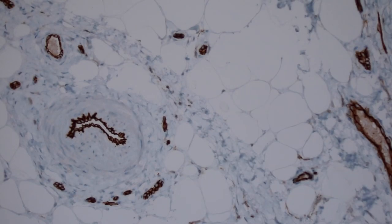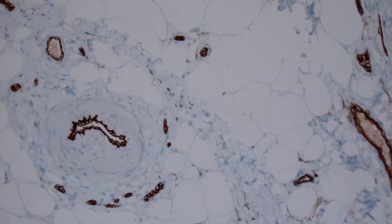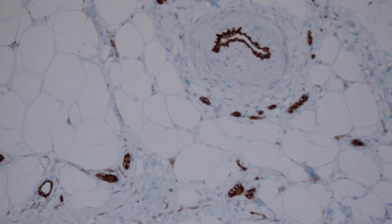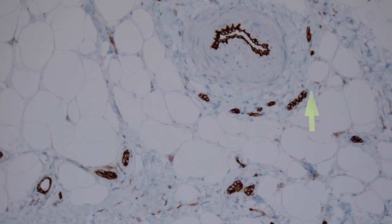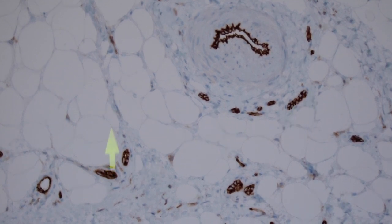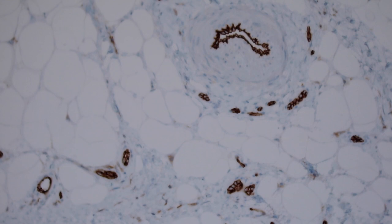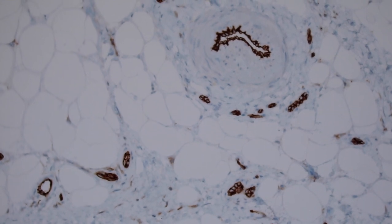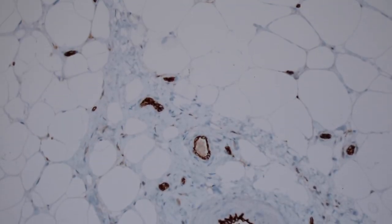So again you can tell that the inner lining and the wall of the vessel are actually made of different components. And you can see all these little vessels around here, these smaller capillaries, they all have the lining cells, the endothelial cells are staining with CD31.